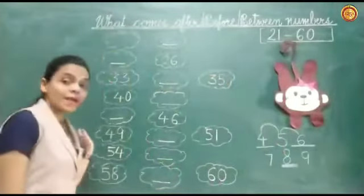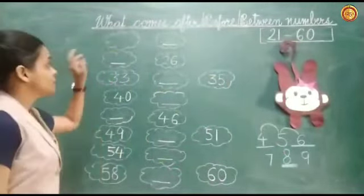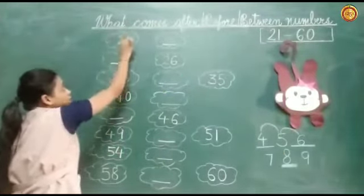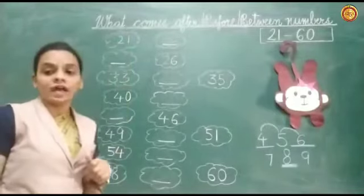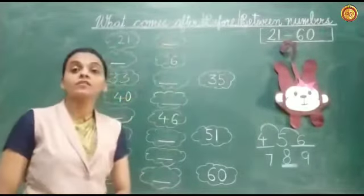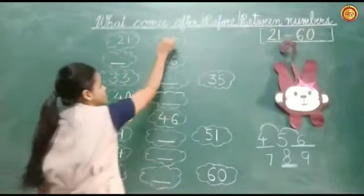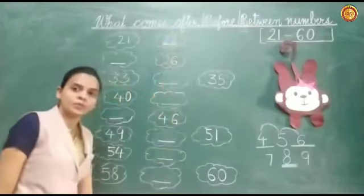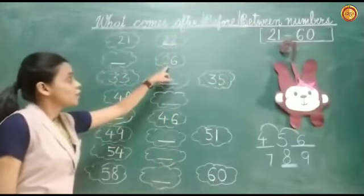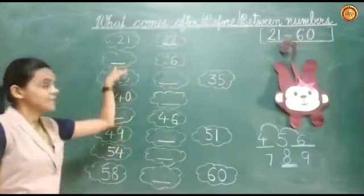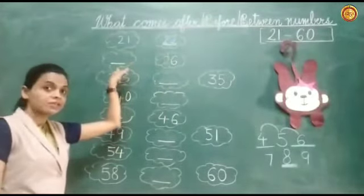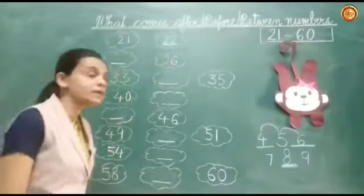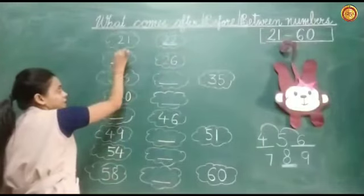Now look at the board everyone. Tell me, after twenty-one — after twenty-one, what will come here? Twenty-two. Now, before 26 — 26 ke before me dash hai, toh yaha phe before wala number ayega. Before 26, what will come here? 25.